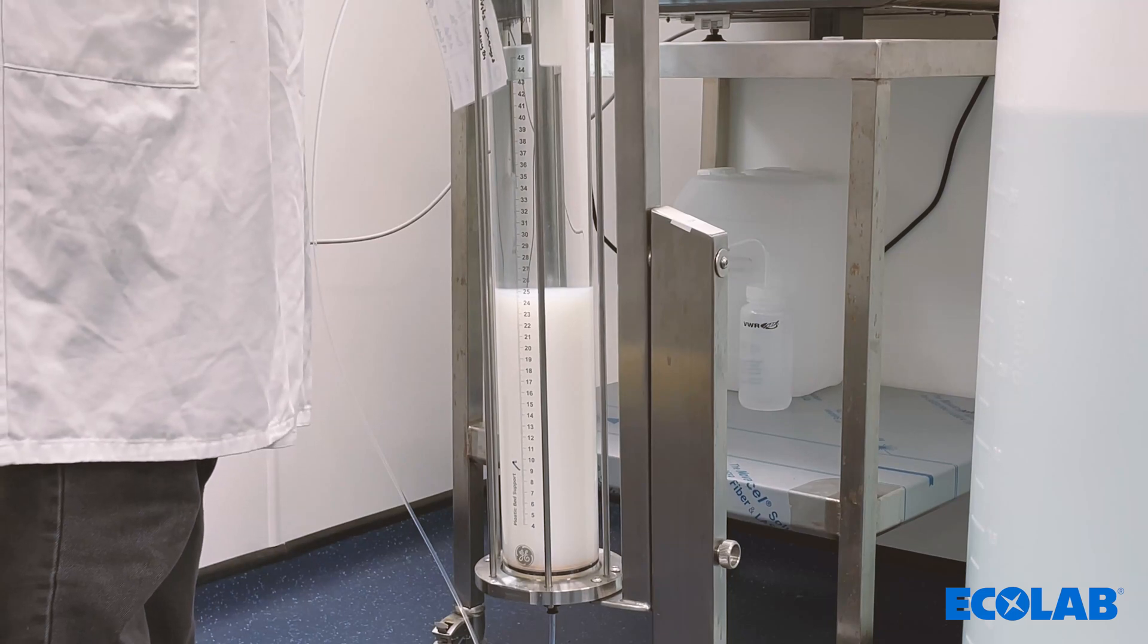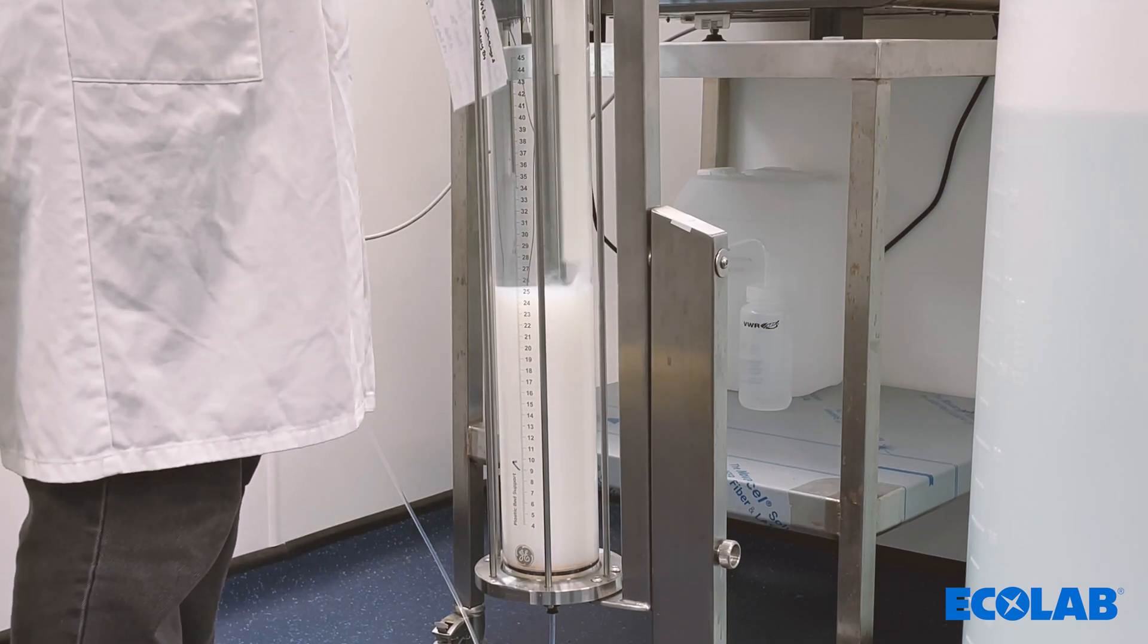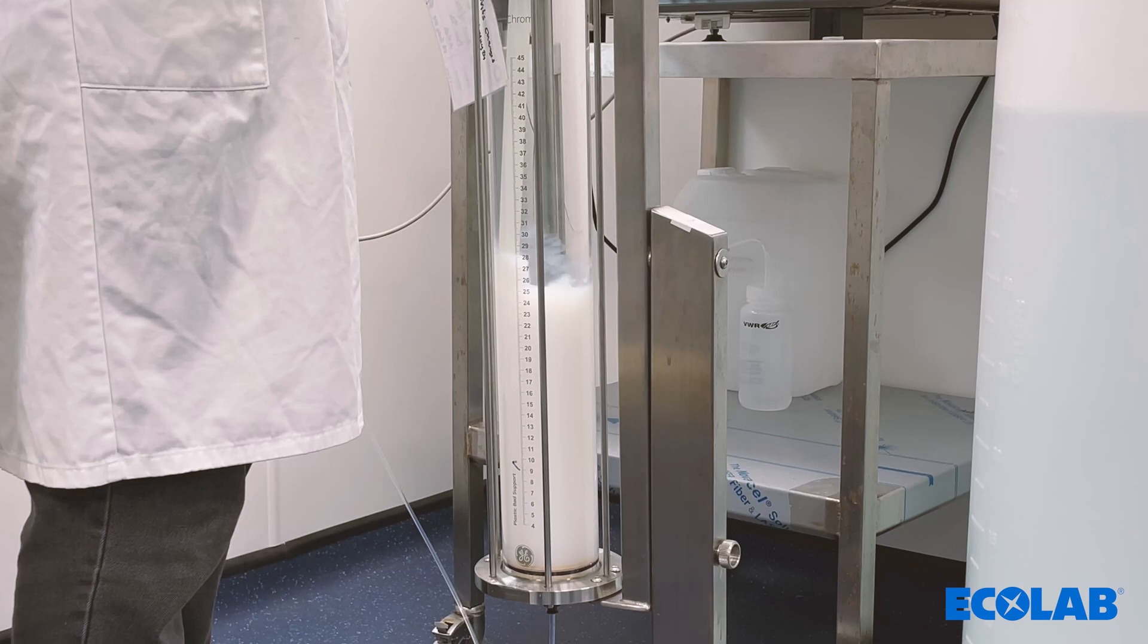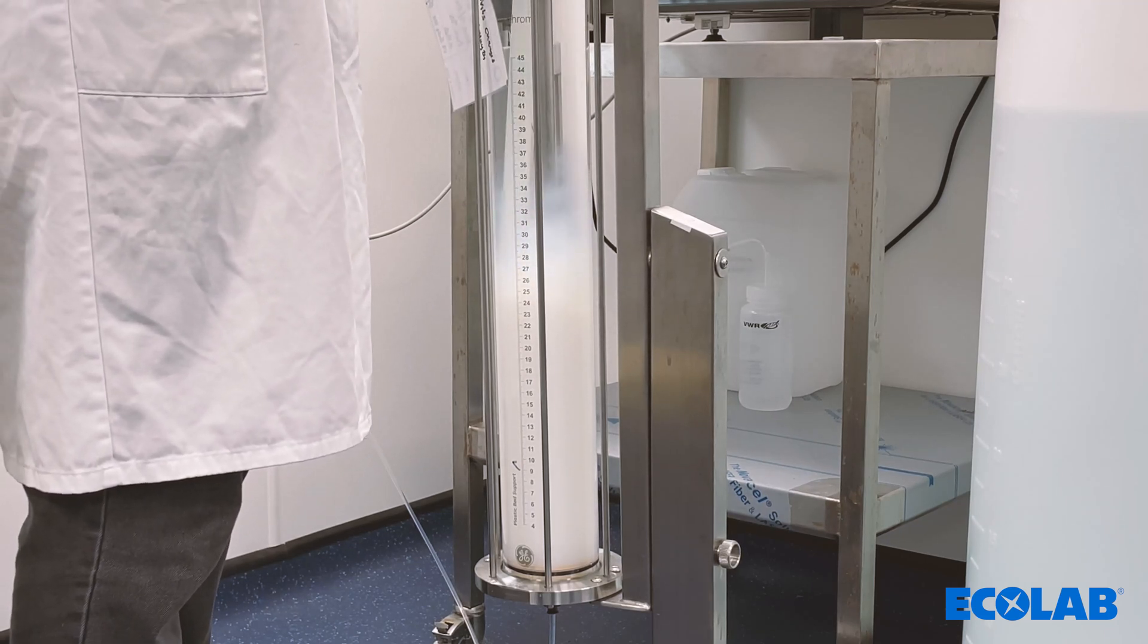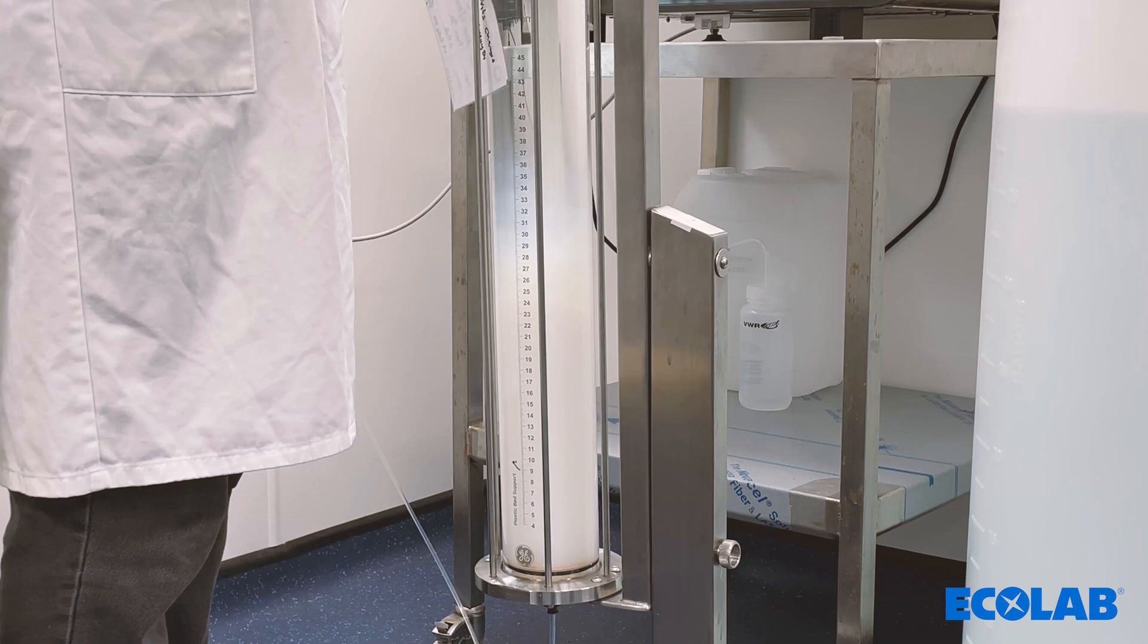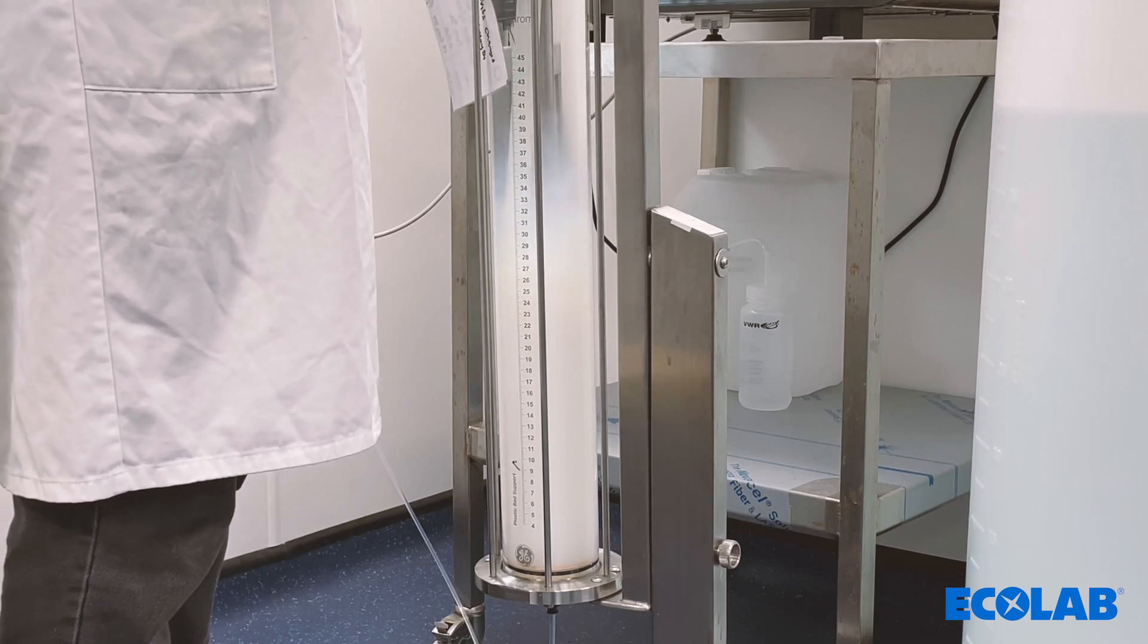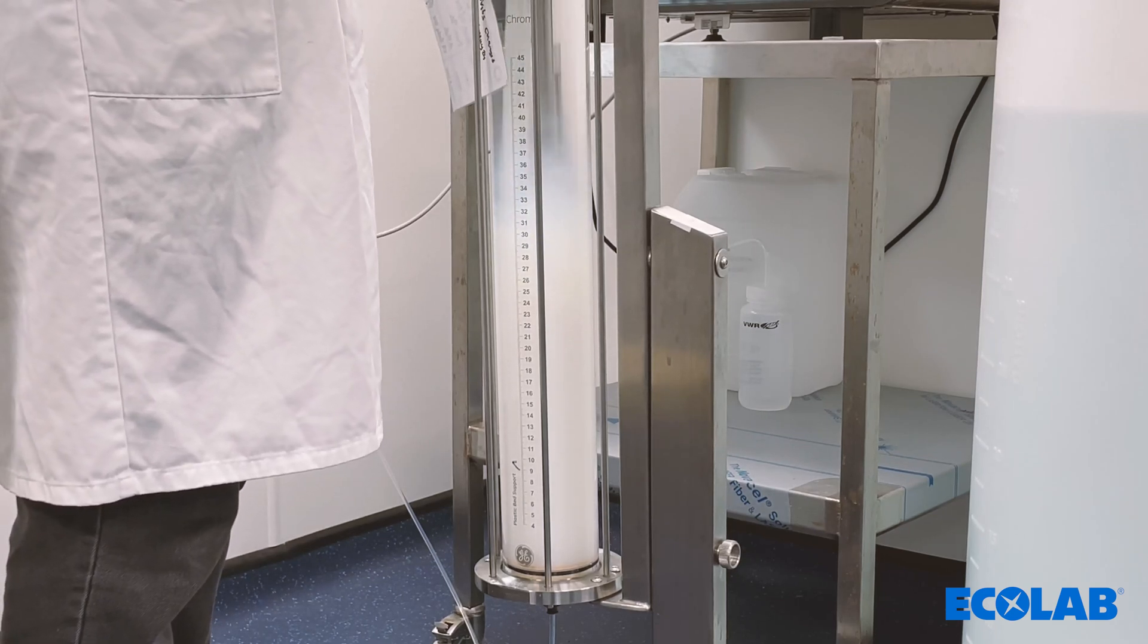Once the resin is in the packing buffer, the resin needs to be mixed to a homogenous slurry using the media wand. The resin needs to be allowed to settle up to 5 centimeters before the top adapter is added to the column. This avoids any resin being lost above the adapter.